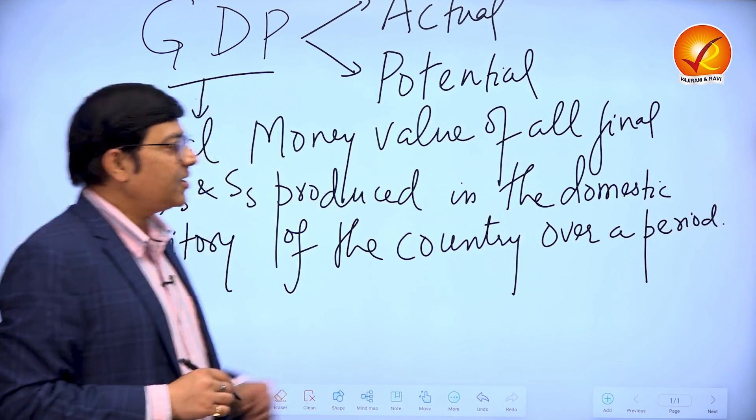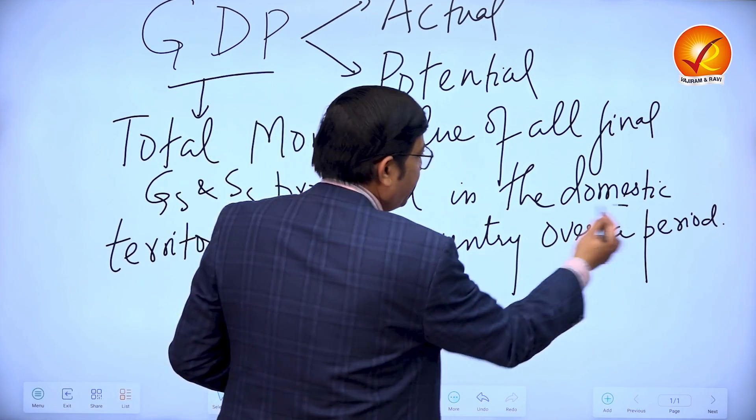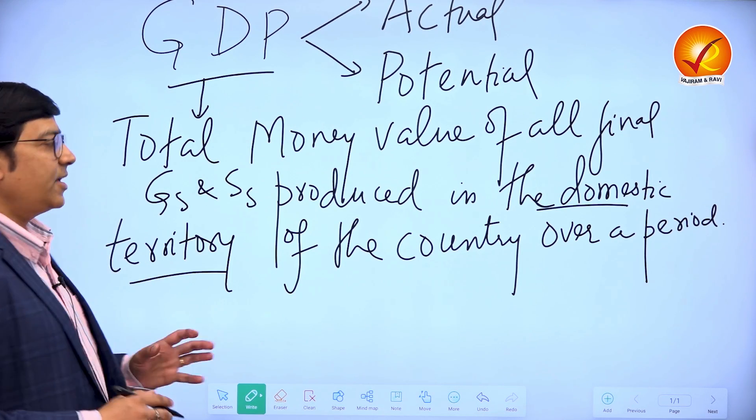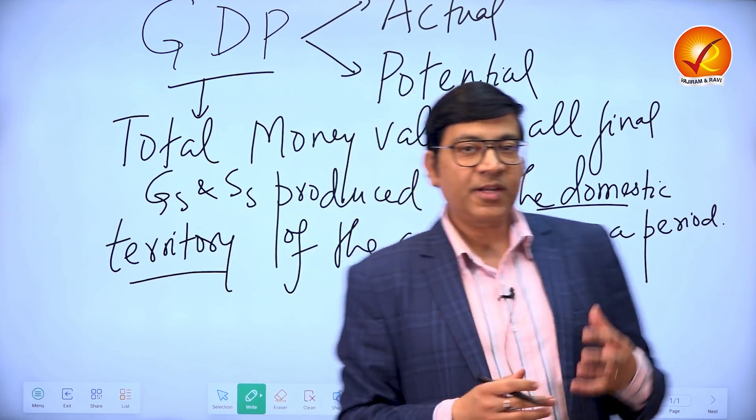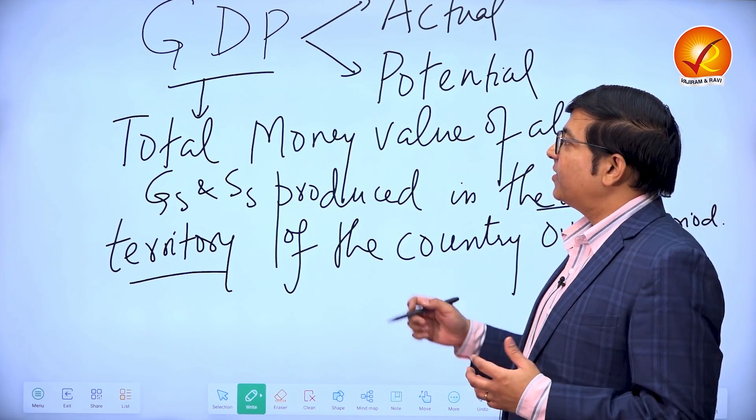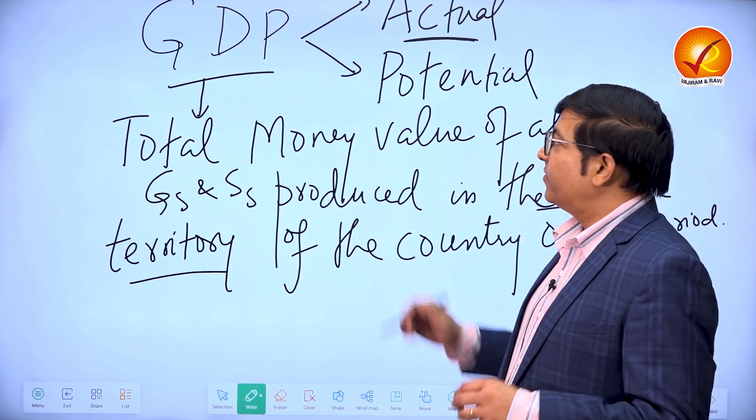Generally, this period is a period of one year and domestic territory broadly means the territory over which the political frontier of that particular country remains. So this is basically also actual GDP, which is ordinary.